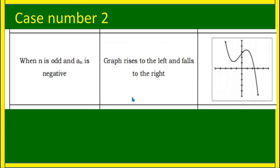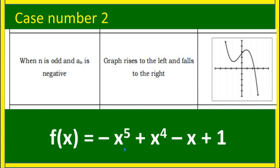Case number two: when n is odd and a sub n is negative. Example: f(x) = −x⁵ + x⁴ − x + 1. The degree of the polynomial is 5, which is odd, and the leading coefficient is negative 1. So the end behavior is the graph rises to the left and falls to the right.